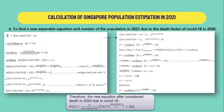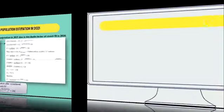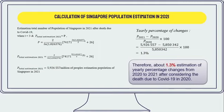Subsequently, we find the population in 2021 accounting for the death factor due to coronavirus in 2020 by using the separable equation, forming a new equation as stated in the figure. Lastly, we substitute the values into the new equation to calculate Singapore's human population in year 2021 including coronavirus deaths, giving an estimated population of 5,926,557 people. We also calculate the percentage of population change for easier comparison.